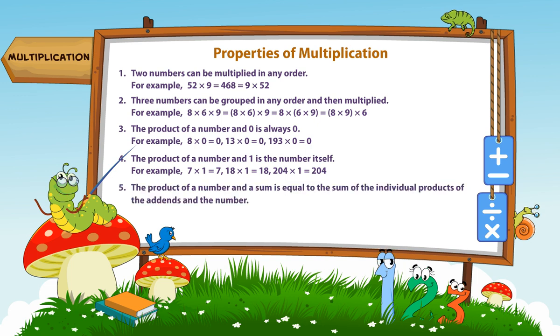The product of a number and a sum is equal to the sum of the individual products of the addends and the number. For example, 6 multiplied by 8 plus 5 is equal to 6 multiplied by 8 plus 6 multiplied by 5.